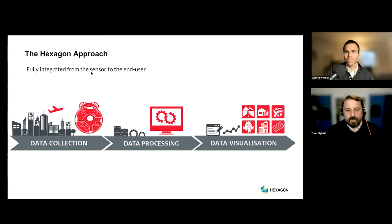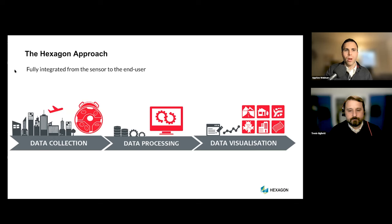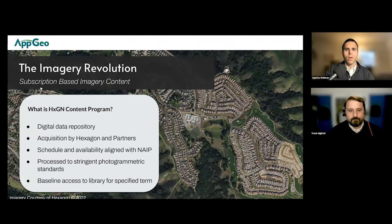Going one step further, Hexagon is nearly ready to launch on the aerial side of their HxDR Pro platform — the ability to take the sale and visualization of data sets to the next level. That history goes back to nearly the Wright Brothers era. For those not aware, Leica is part of Hexagon. Those companies merged over time and all their resources are under one roof, which is impressive when you think about going from aircraft to processing to serving the data to all their customers.